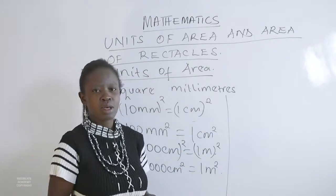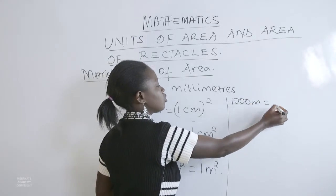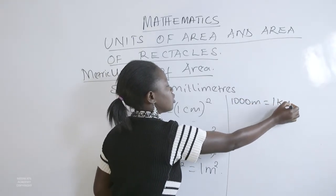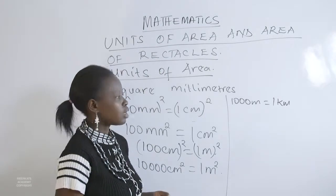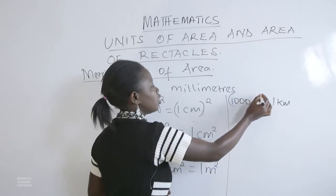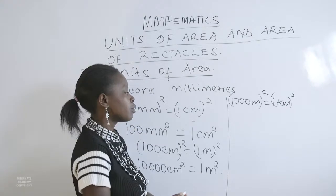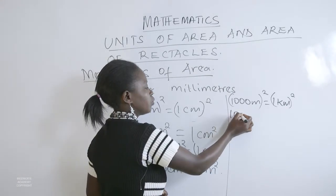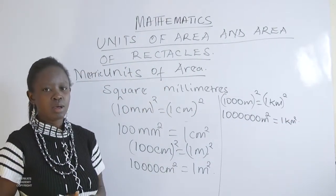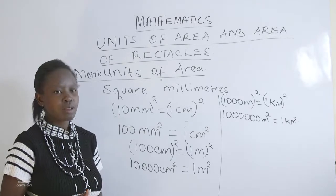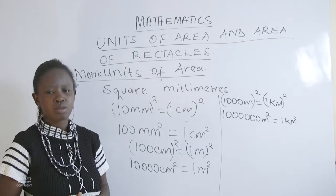We also have 1,000 meters being equal to 1 kilometer. Squaring both sides of our equation gives us that 1,000 squared will be 1 million. So 1,000,000 square meters will be equal to 1 square kilometer.